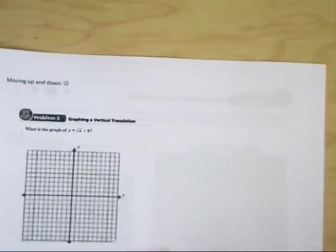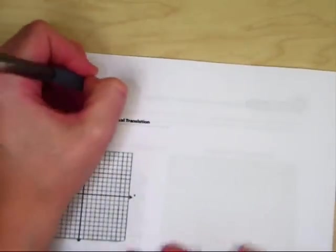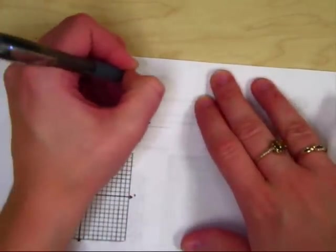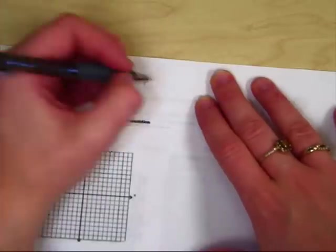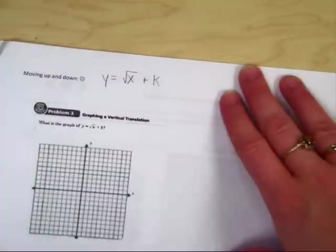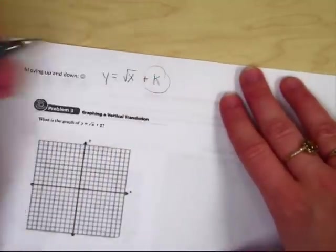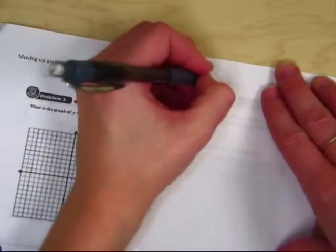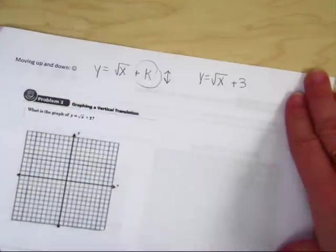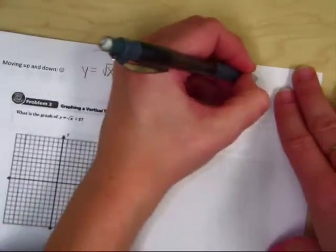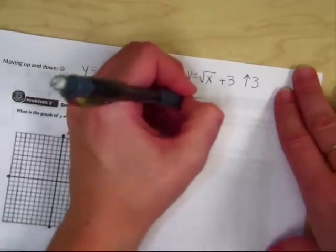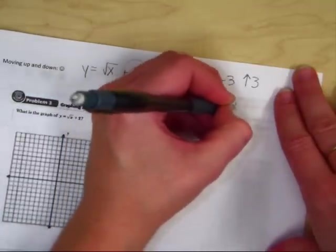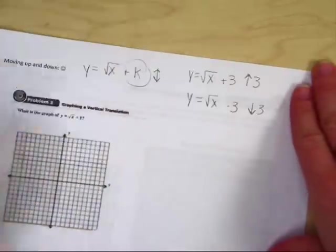Moving on to problem 3, I need you guys to understand when you see a problem, you should know if it moves up and you should know if it moves down. So if you have y equals the square root of x plus k, that means it would move up or down k units, depending if k is positive or negative. So if I had y equals the square root of x plus 3, that means it would move up 3 units. On the other hand, if I had y equals the square root of x minus 3, that would tell me it moves down 3 units.